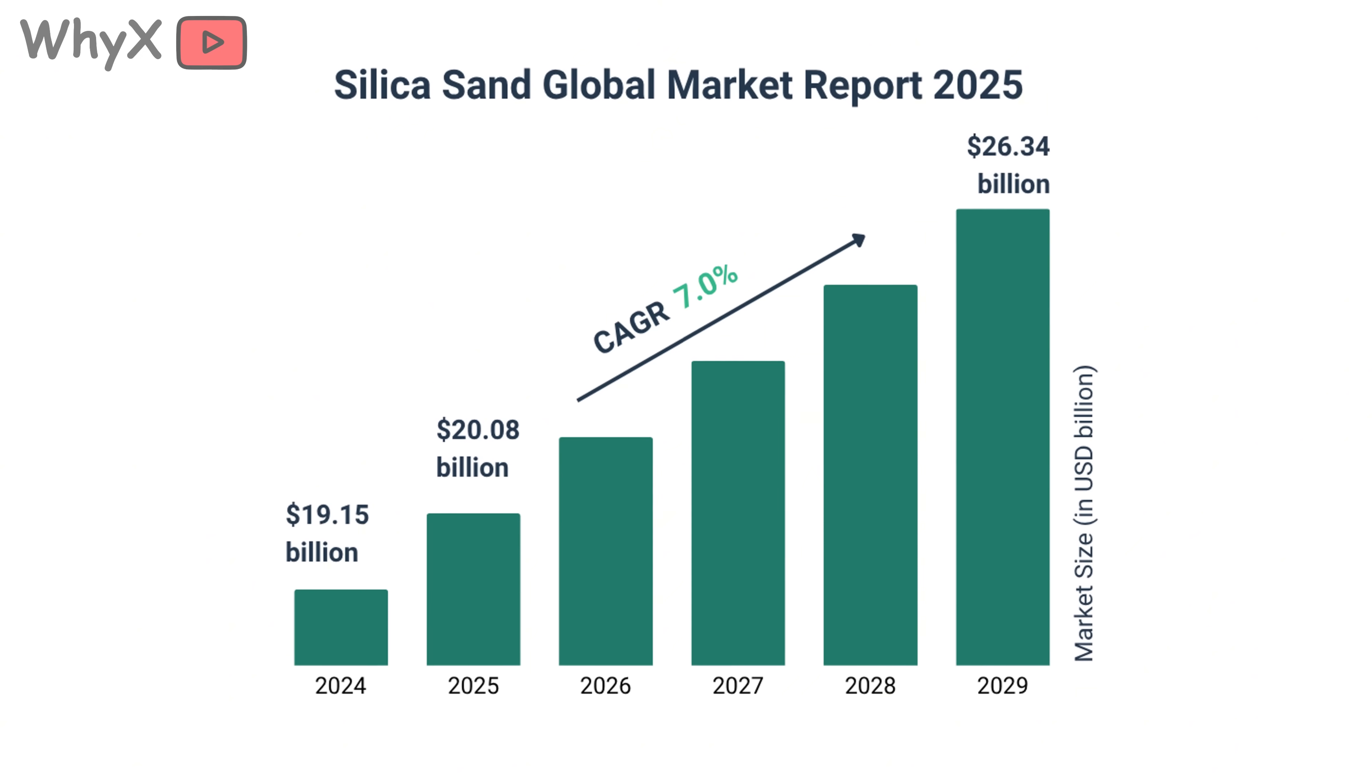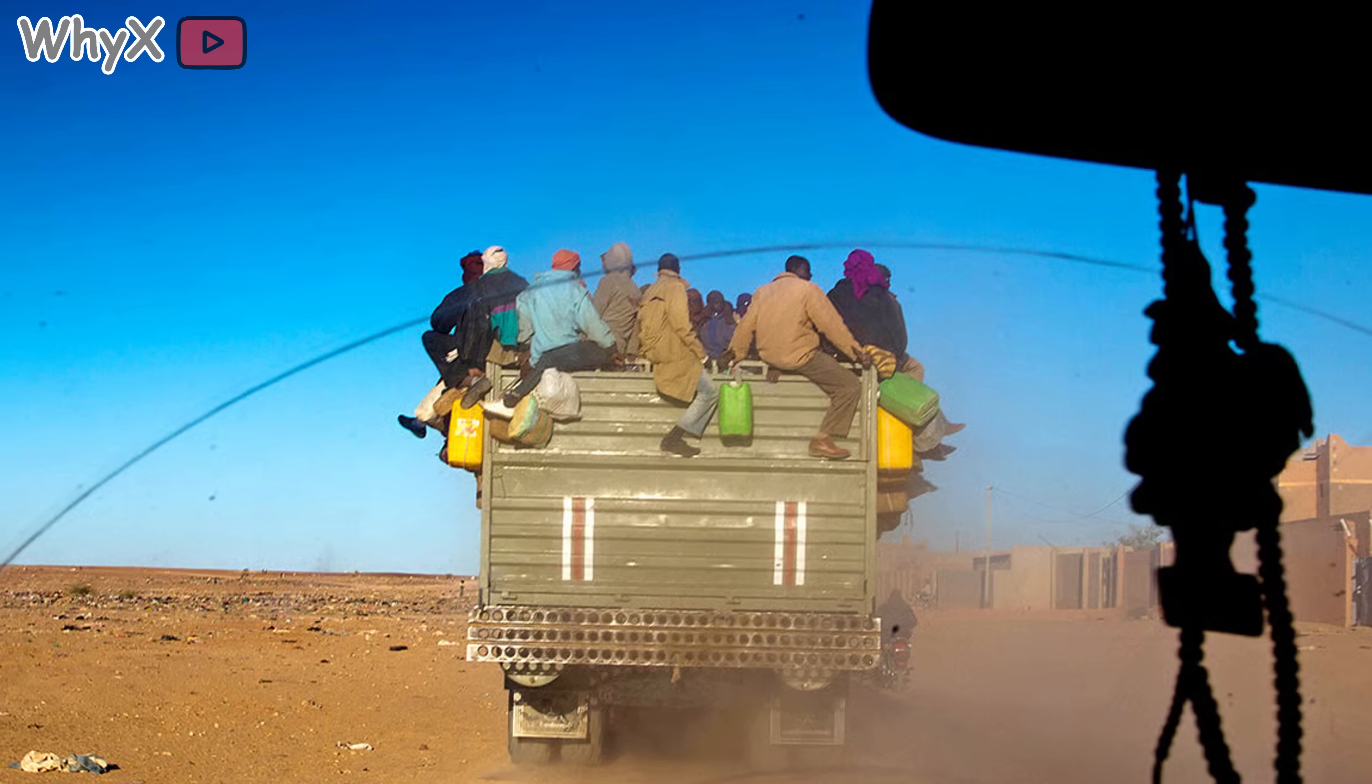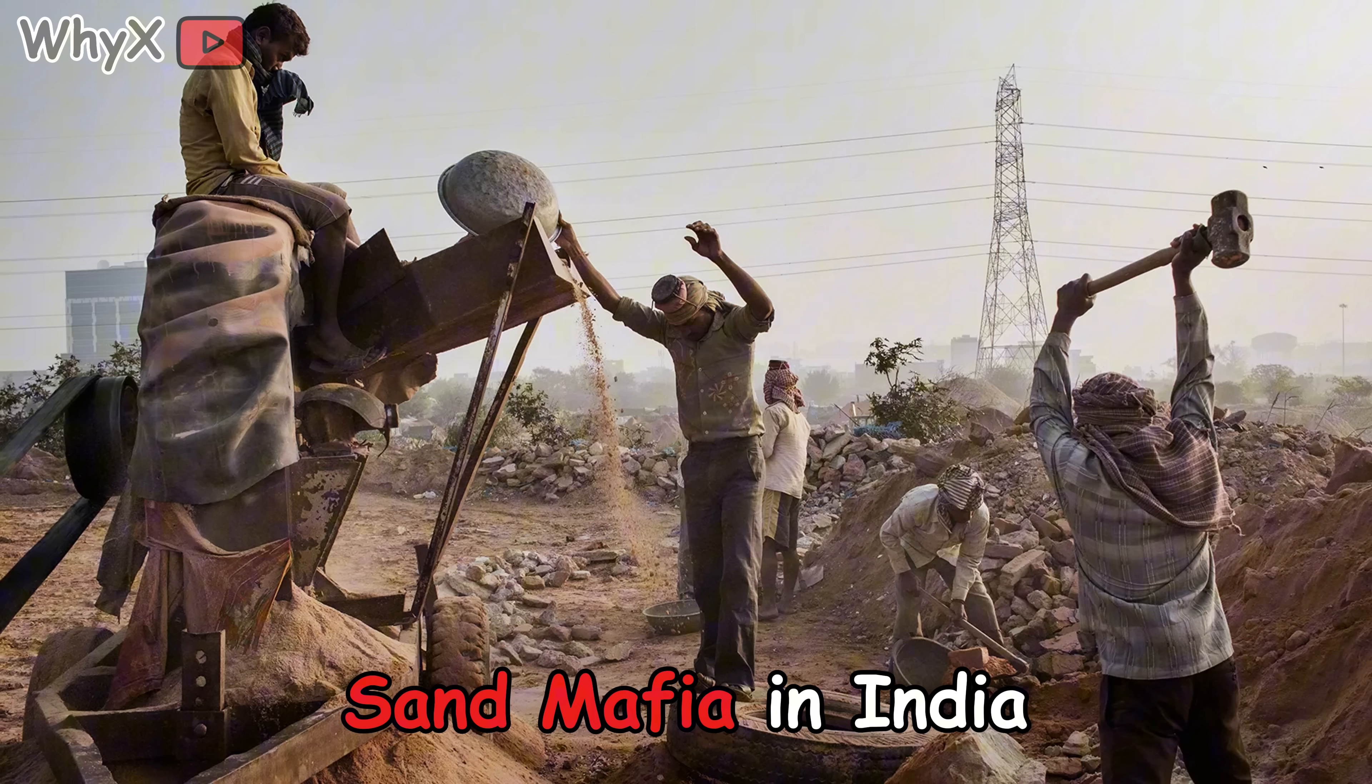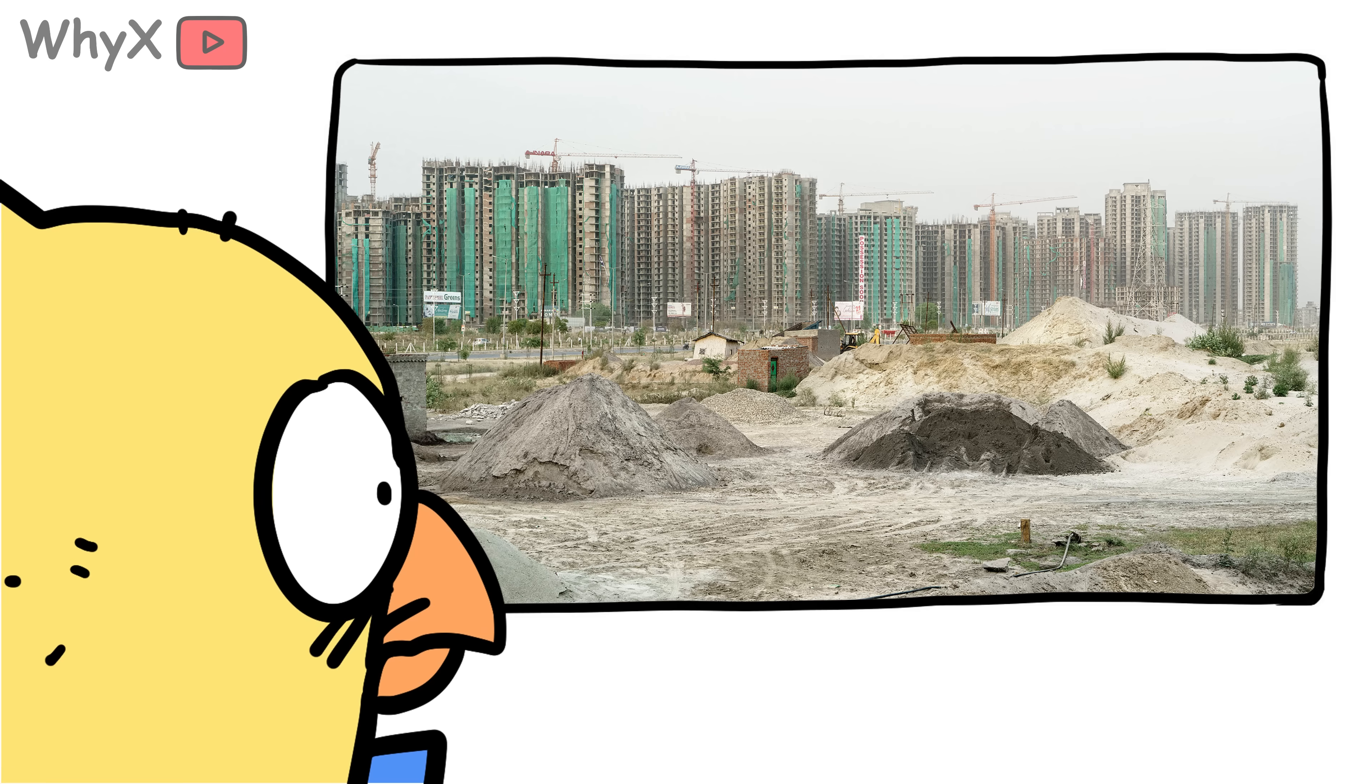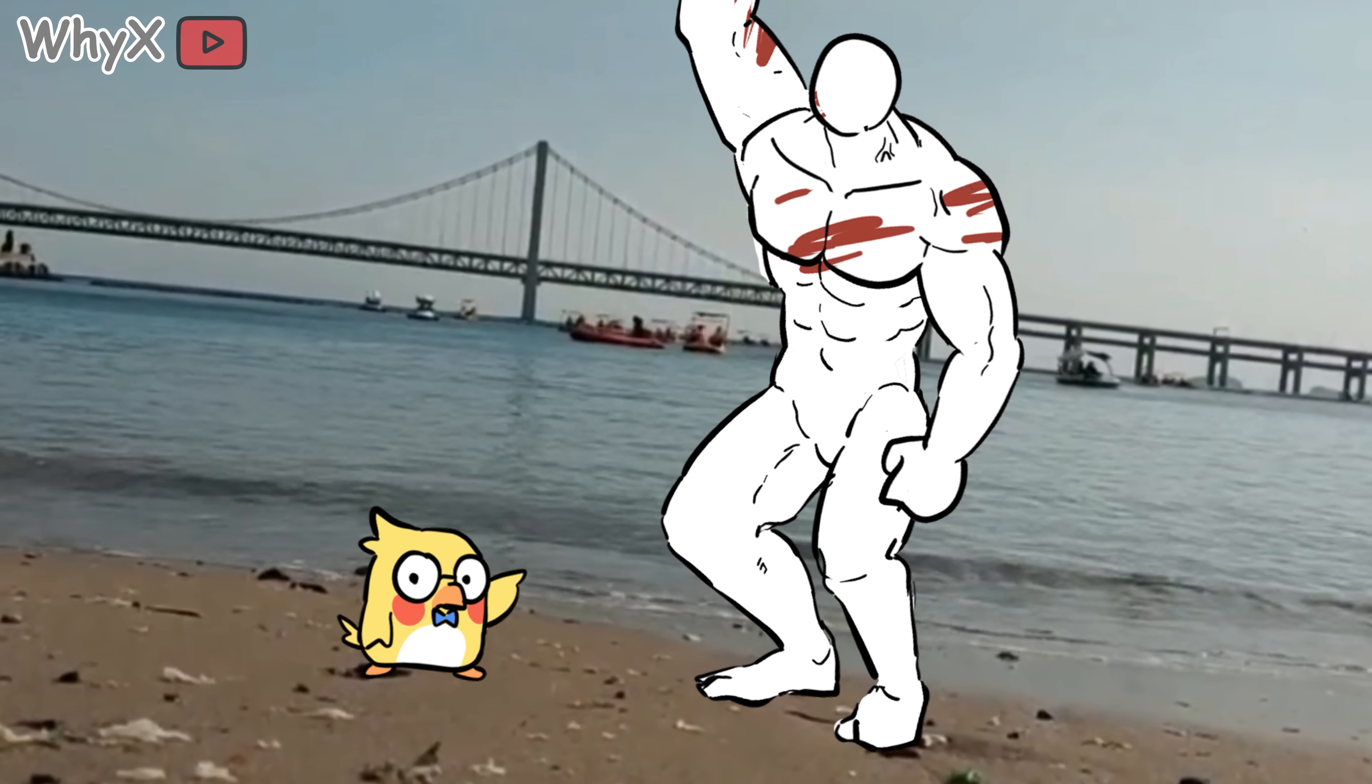This has led to a booming black market for sand. Yes, there is a black market for sand. Organized crime groups in several countries are making billions from illegal sand mining. In some parts of India, sand mafias control entire rivers, and violence surrounding sand disputes has become deadly. We are not talking about corporate competition. We are talking about people getting killed over sand. This is not fiction. This is happening.